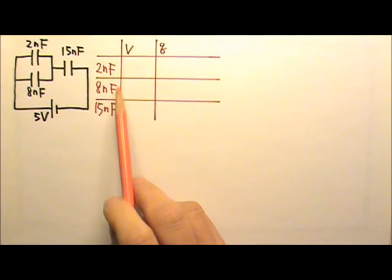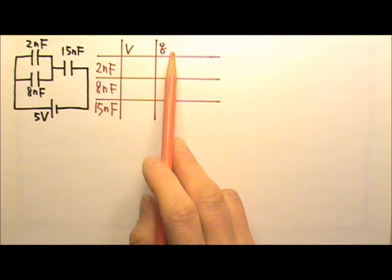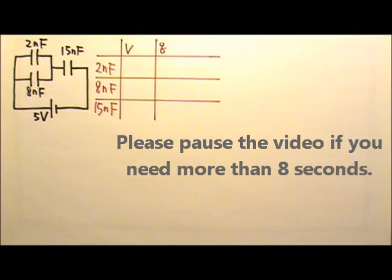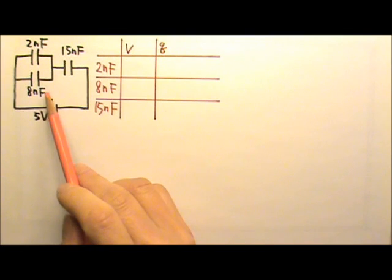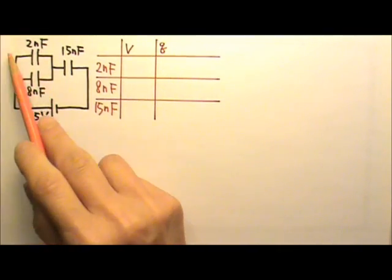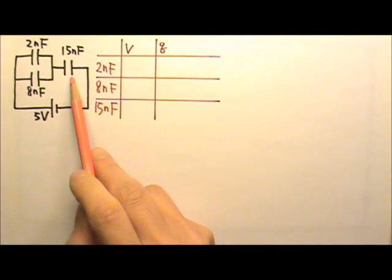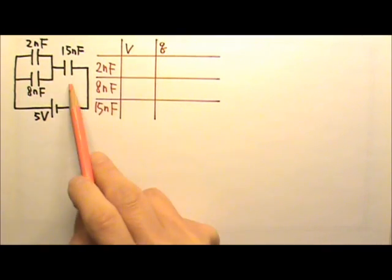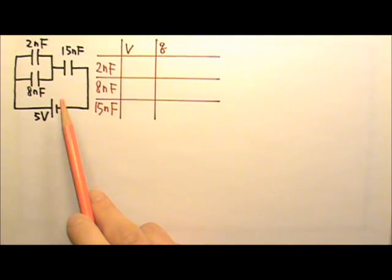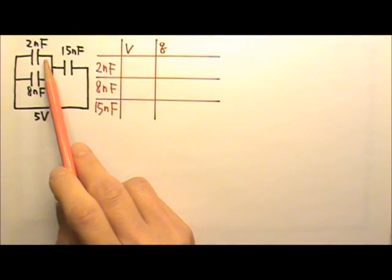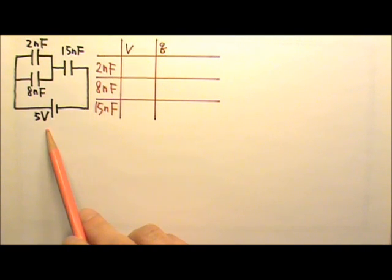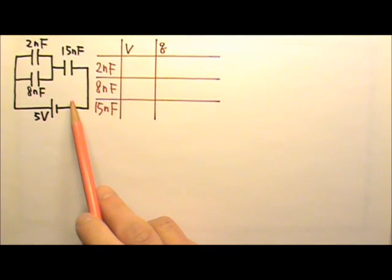For this circuit, please find the voltage across and charge stored in each capacitor. Here we have two capacitors in parallel, and together they are in series with this capacitor. They are in series, so they have to share the voltage. That means no single capacitor gets all the 5 volts. For this problem, it may be easier for us to look at its equivalent circuit.